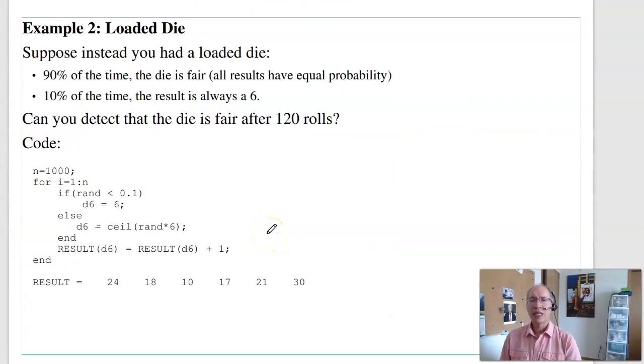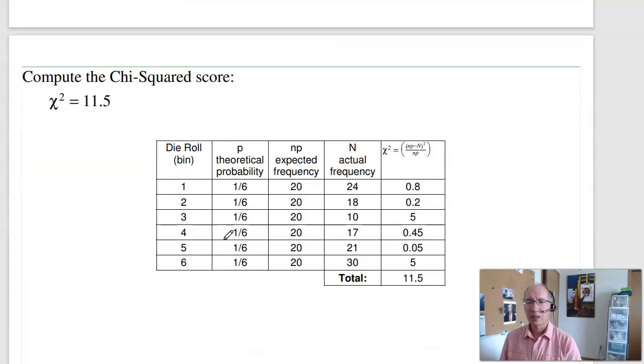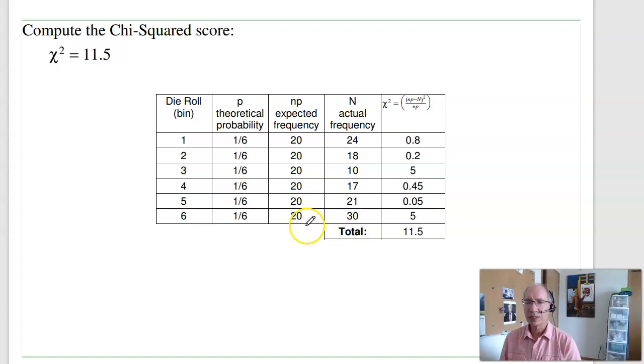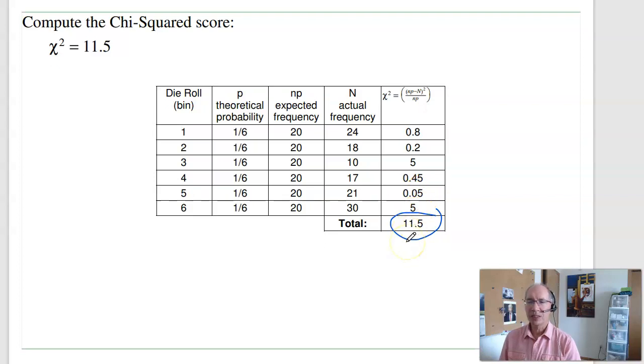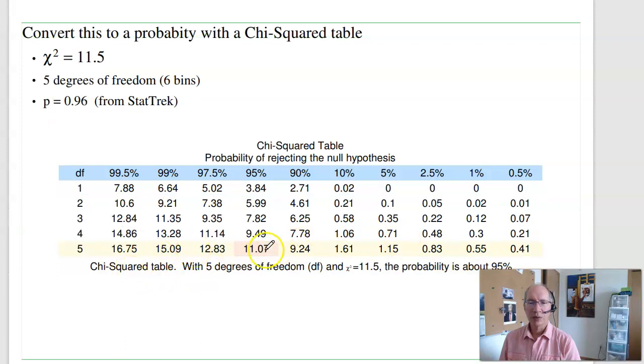Now, example two. Suppose I had a loaded die. What I'm going to do is, 10% of the time, I always roll a 6. The rest of the time, it's a fair die. Can I tell whether that die is loaded if I roll the dice 120 times? So, here's my result. To determine whether that's a loaded die, do the same procedure. I'll set up this table. Here's the expected frequency. Here's the actual frequency. Take the difference squared, divide it by expected, add them all up. I've got 11.5. To determine what 11.5 means, use a chi-squared table. 5 degrees of freedom, 11.5 is right around here. So, I'm 95% certain that this is a loaded die.